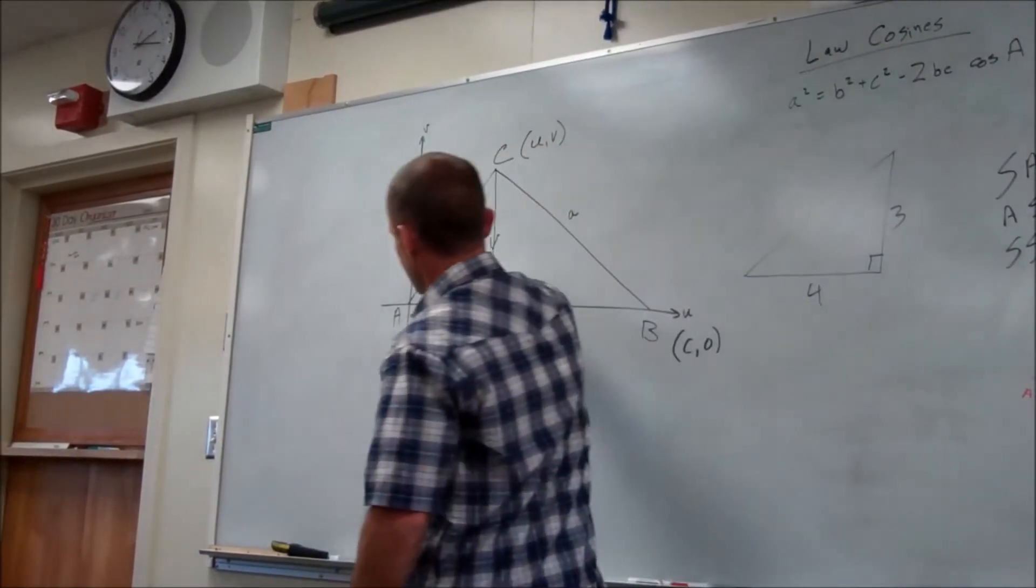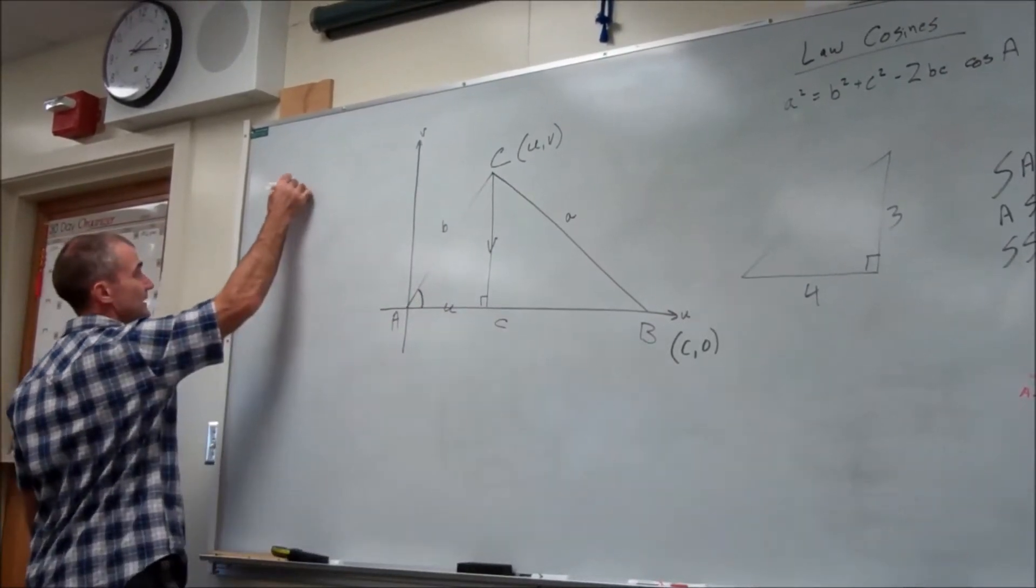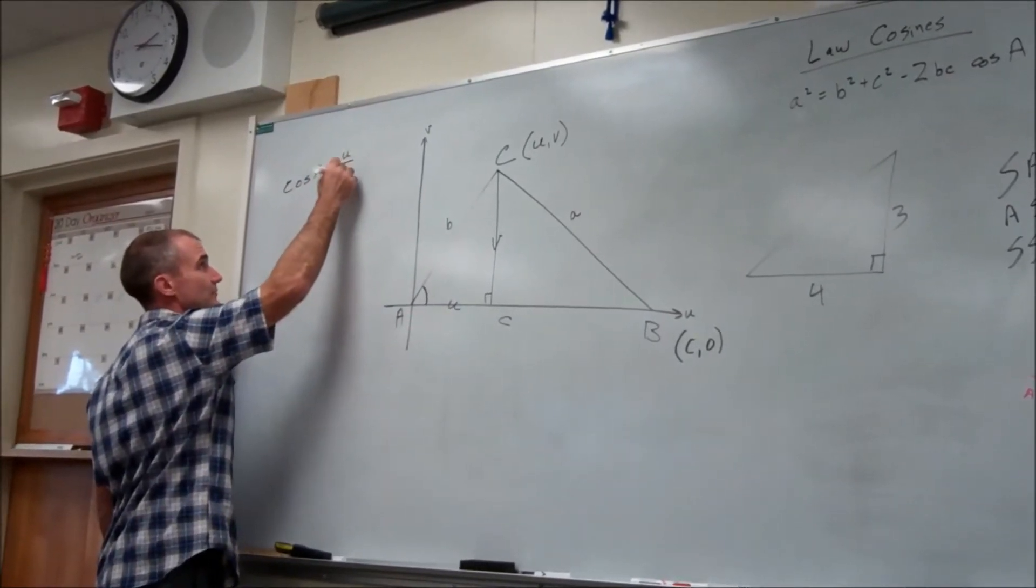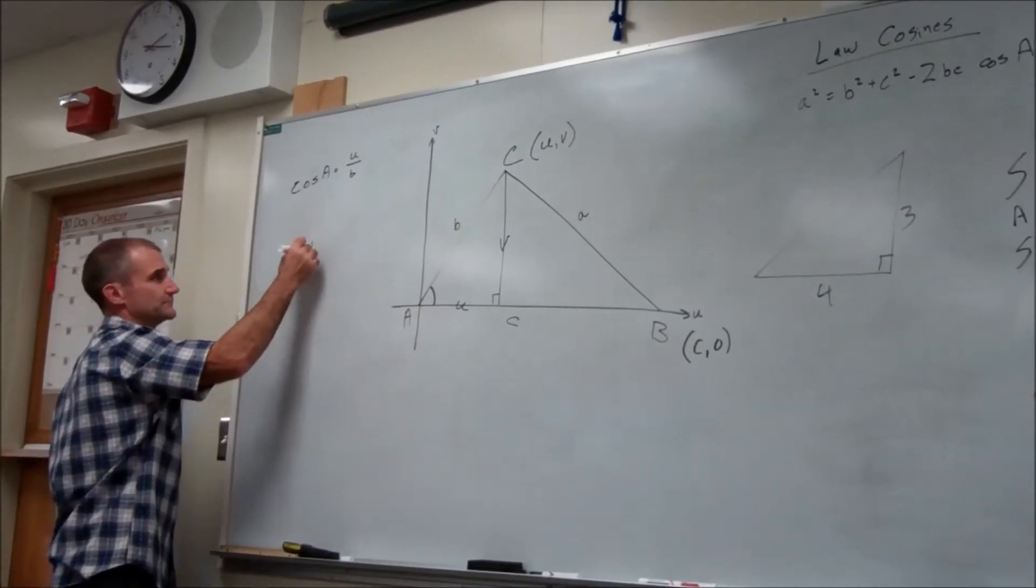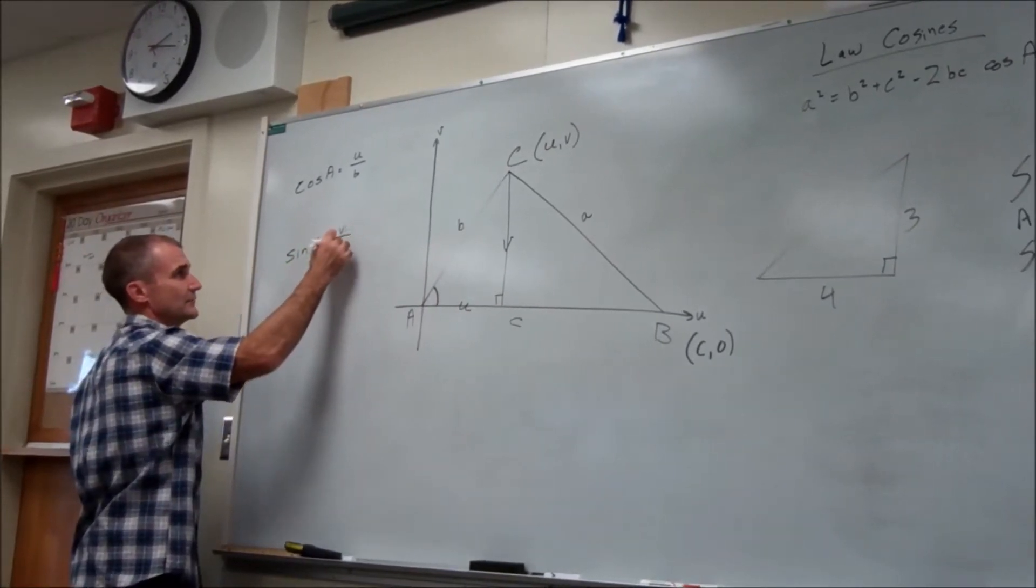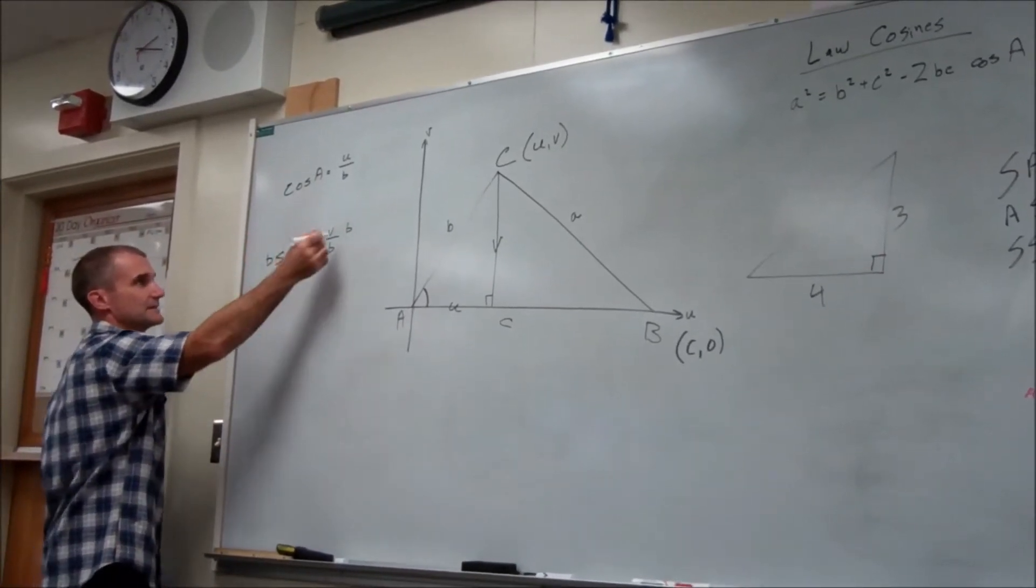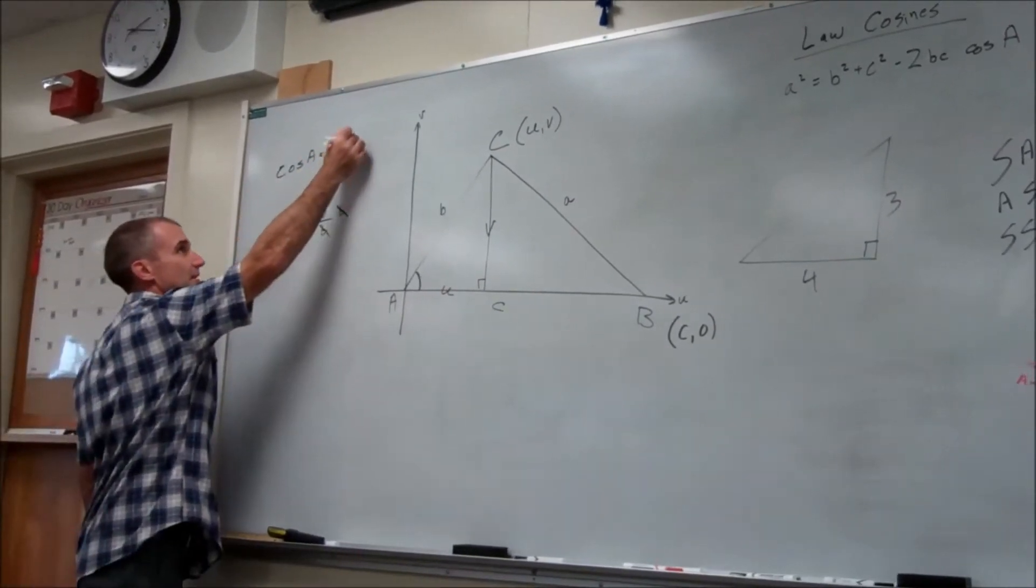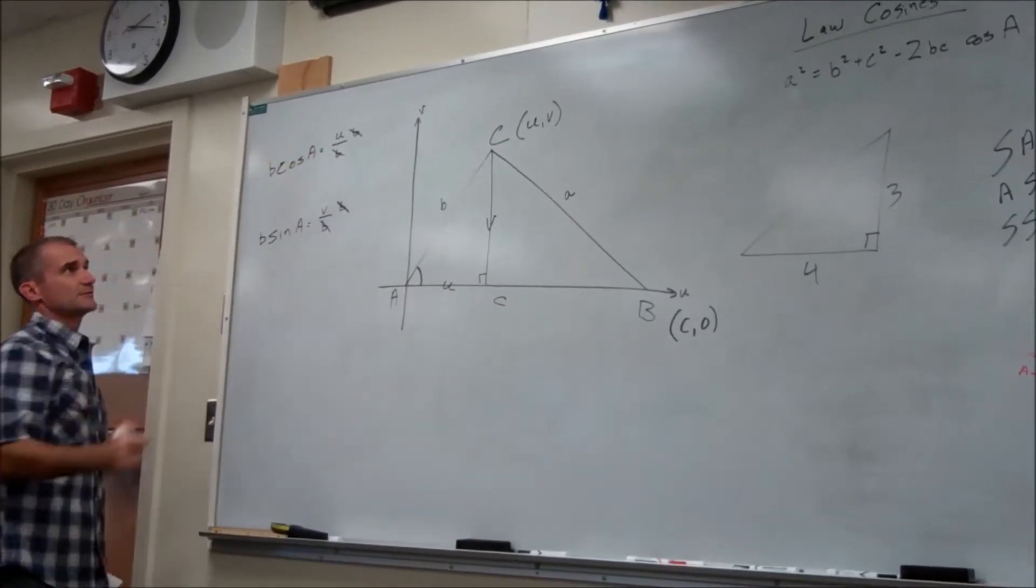Then this angle right here, a, I know that the cosine of angle a, cosine of angle a is equal to the adjacent over the hypotenuse, u over b. And the sine of angle a is equal to the opposite over the hypotenuse, so it's v over b. If I cross multiply here, multiply both sides by b, I can see these cancel, and that v is equal to b sine of a, and u is equal to b cosine of a.